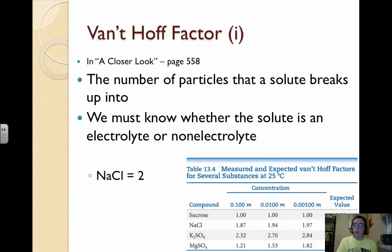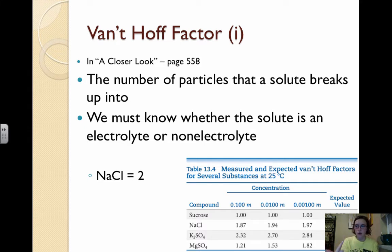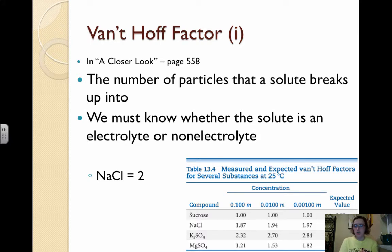For example, we would expect sodium chloride to give rise to two moles of ions, because NaCl breaks apart into Na⁺ and Cl⁻. So if we put in one mole of NaCl, we get one mole of Na⁺ and one mole of Cl⁻, or two moles total. If you actually look up the Van't Hoff factor, you'd find that NaCl is slightly below two because of the reassociation that occurs — not all NaCl breaks down completely. But we're just going to go along with the expected value.